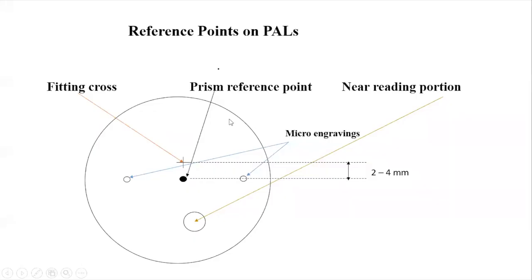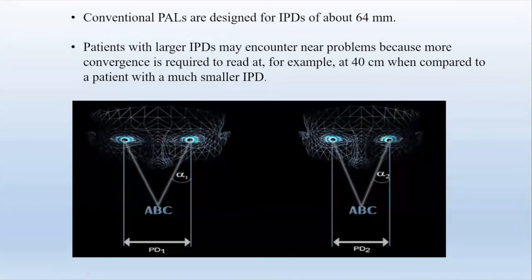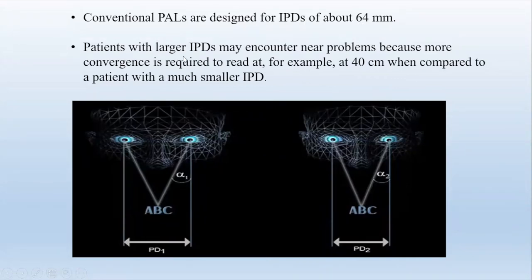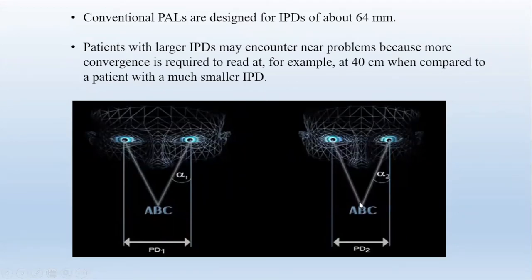Another important thing to remember: conventional PALs and conventional freeform designs are designed for PDs of approximately 64 millimeters. Patients with larger PDs may encounter near problems because more convergence is required to read at the same distance — for example at 40 centimeters — compared to a patient with a smaller PD. Alpha 1 with a wider PD requires more convergence compared to Alpha 2 with narrower PDs at the same reading distance.